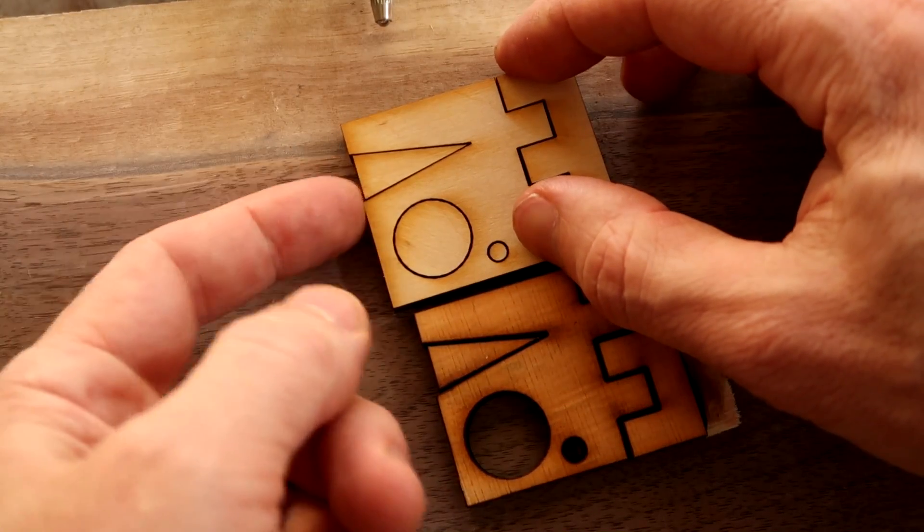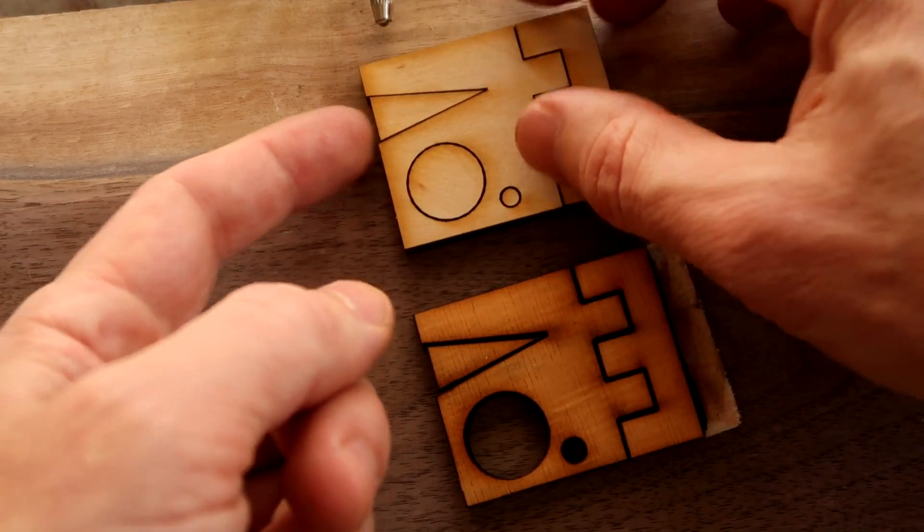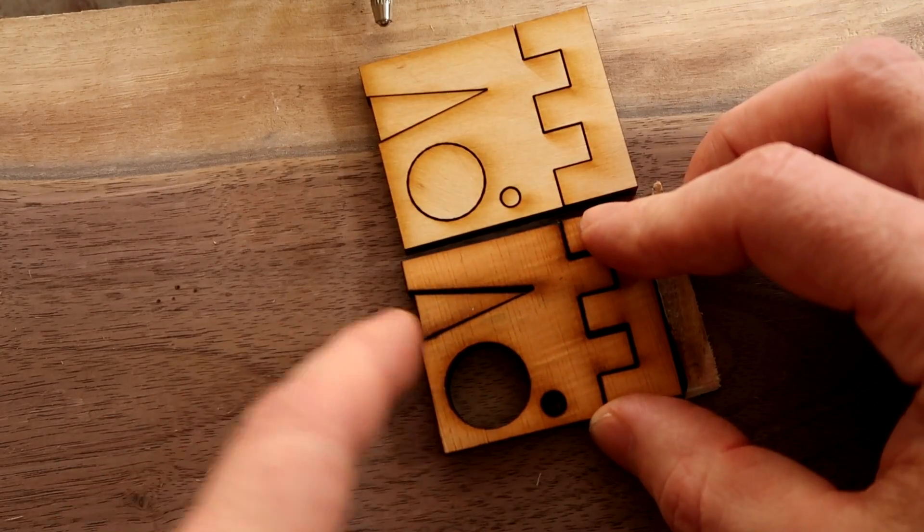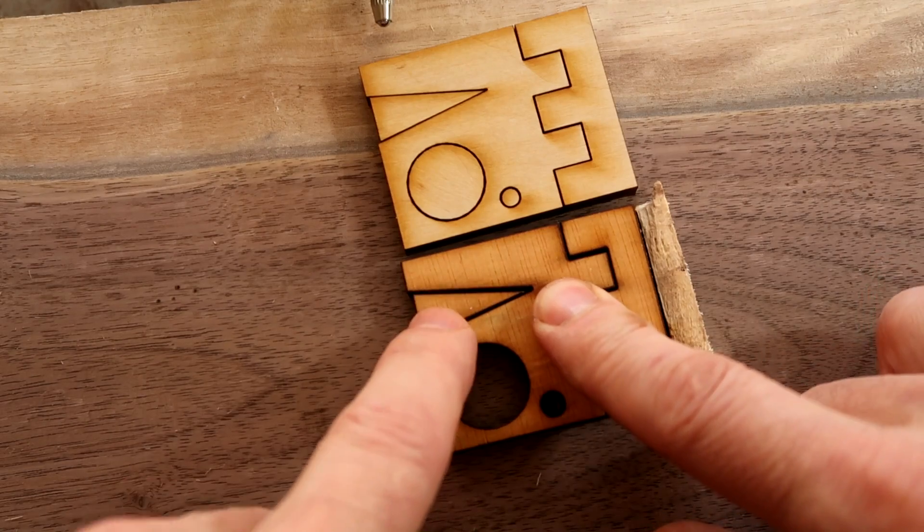Even without a dial indicator you can see this wedge only pushes in a little bit here versus much more here and just a humongously wide cut.